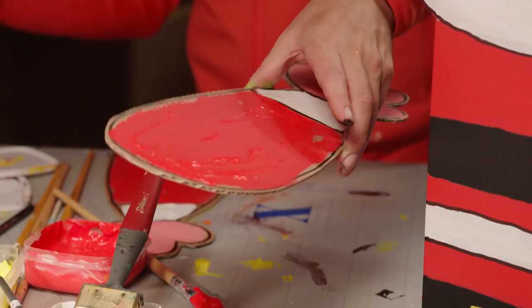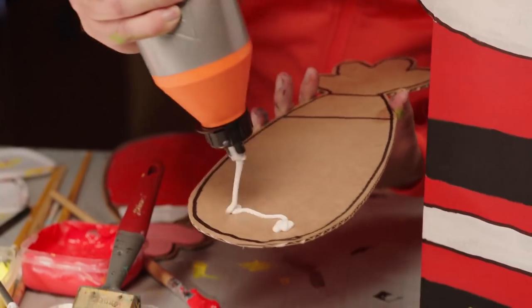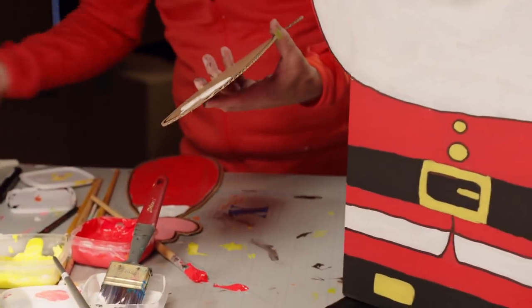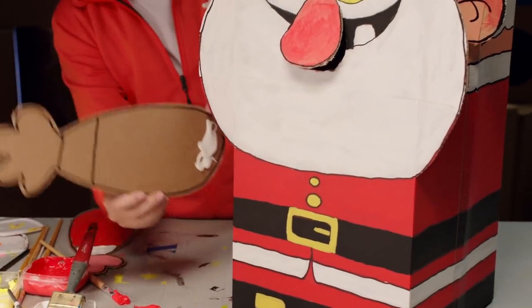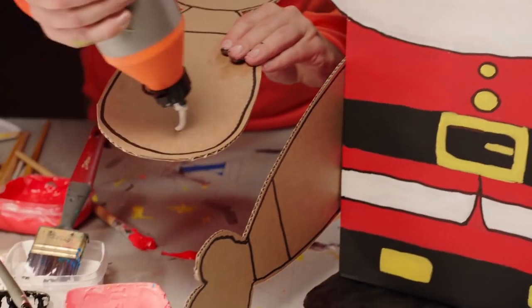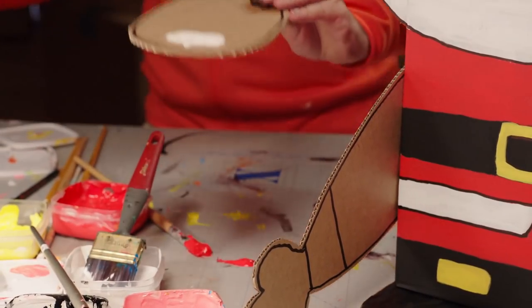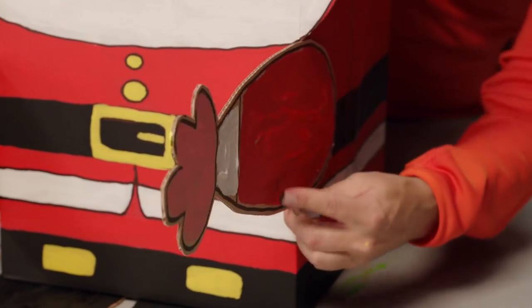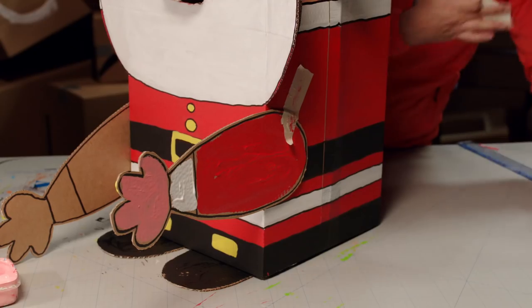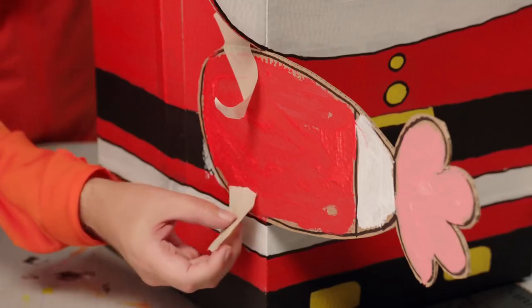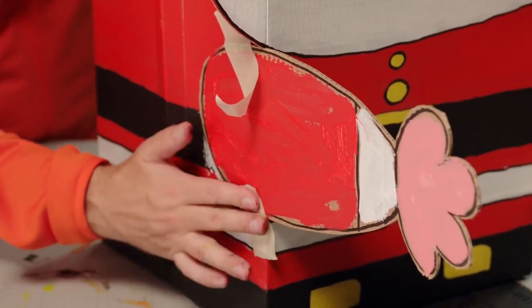Now for the arms. Pop some glue on the side. And press on. Do the same with the other arm. It can be good to use a few pieces of sticky tape to hold the arms in place while you wait for the glue to dry.